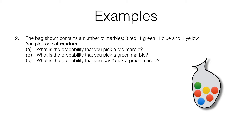In this example we've got a bag with a number of marbles — three red ones, one green one, one yellow one and one blue one. We're told that you pick one at random. That's the key word: it means each outcome is equally likely, which is what we need for theoretical probability. You are equally likely to pick each of the marbles.